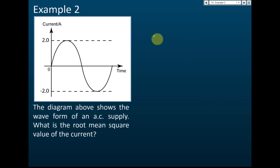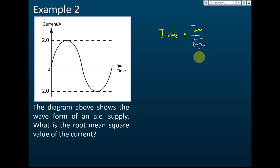Example two: The diagram shows the waveform of an alternating current supply. What is the root mean square value of the current? Same formula: I_rms equals peak current divided by root 2. The peak current is 2.0, so 2.0 divided by root 2 gives 1.4 ampere.